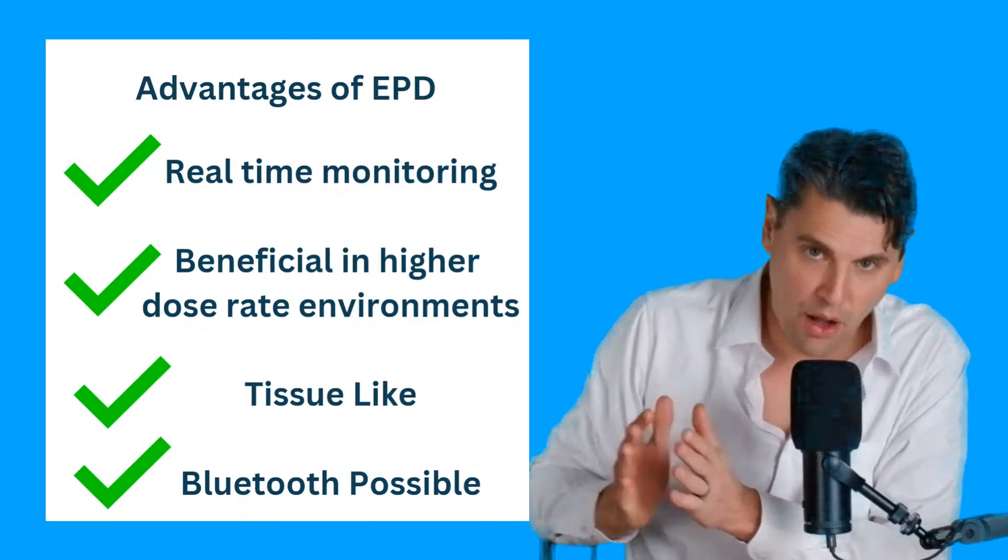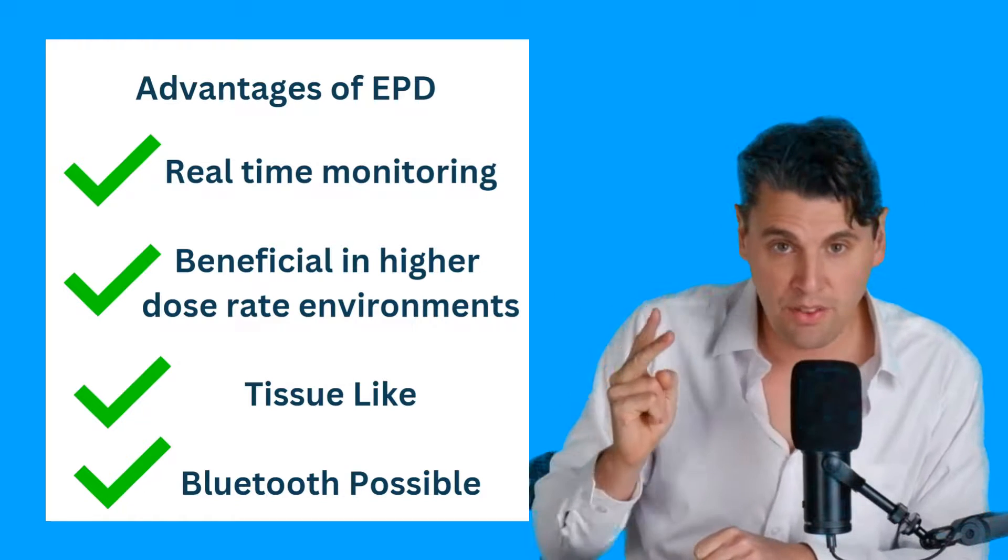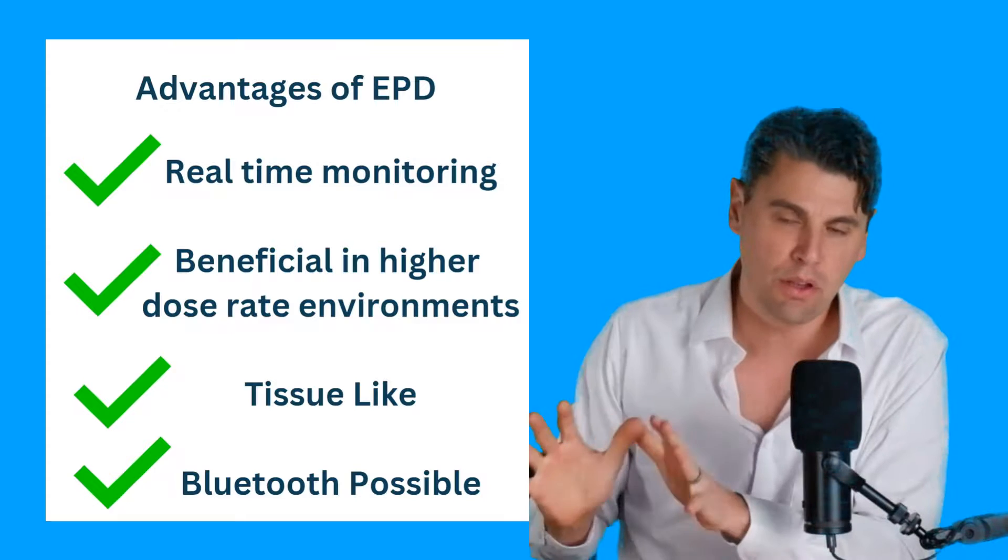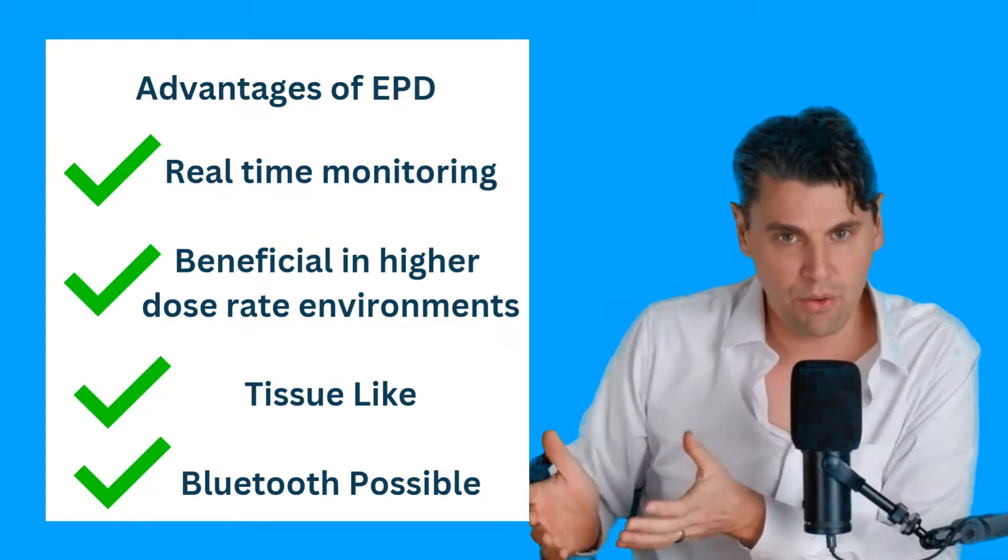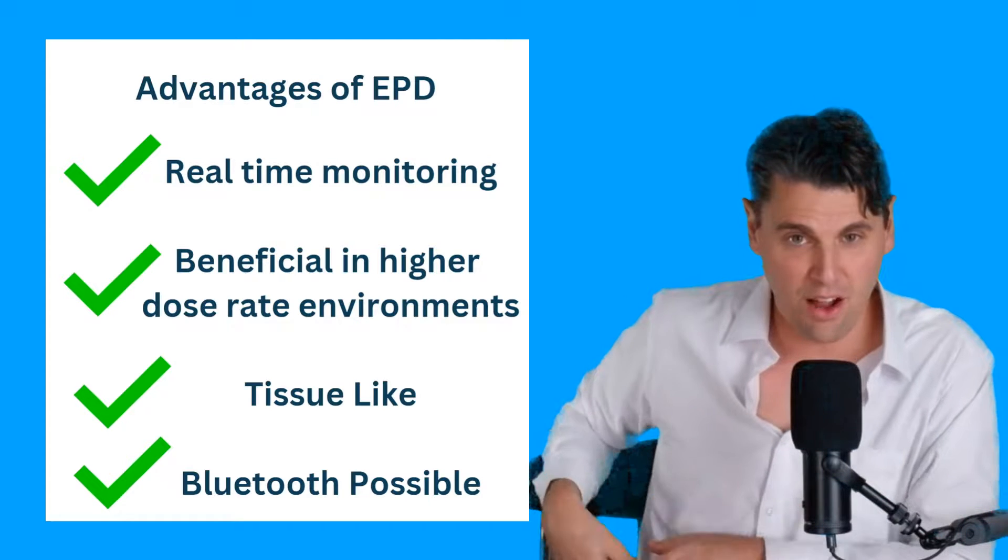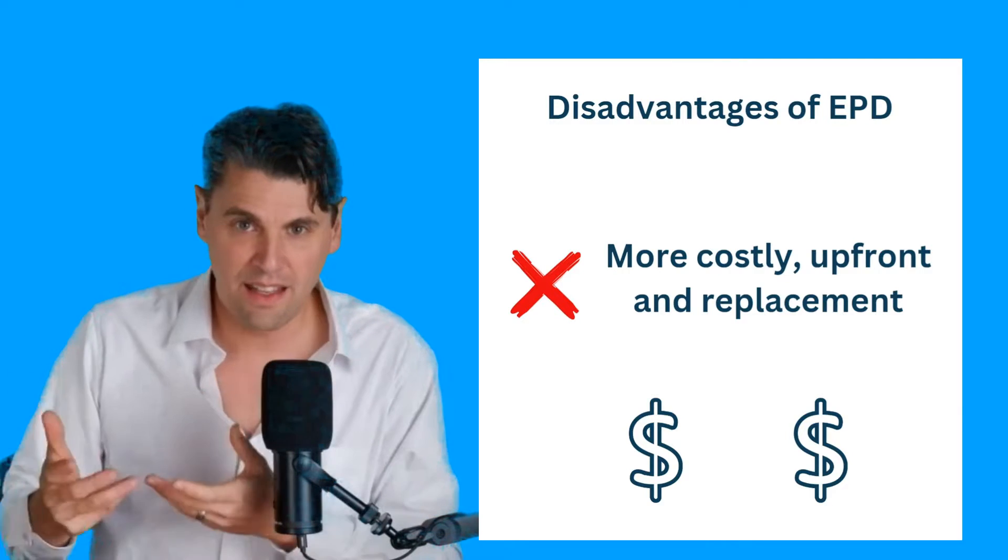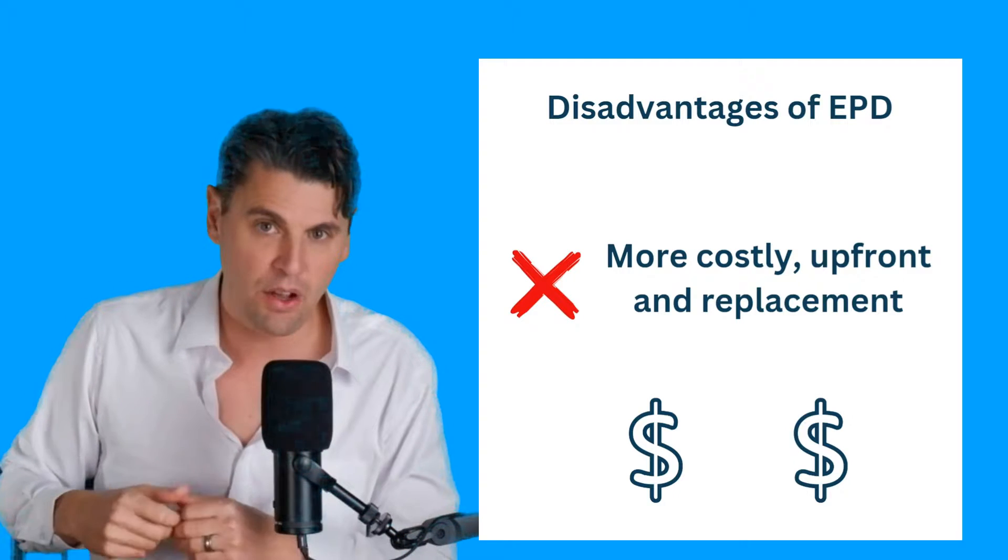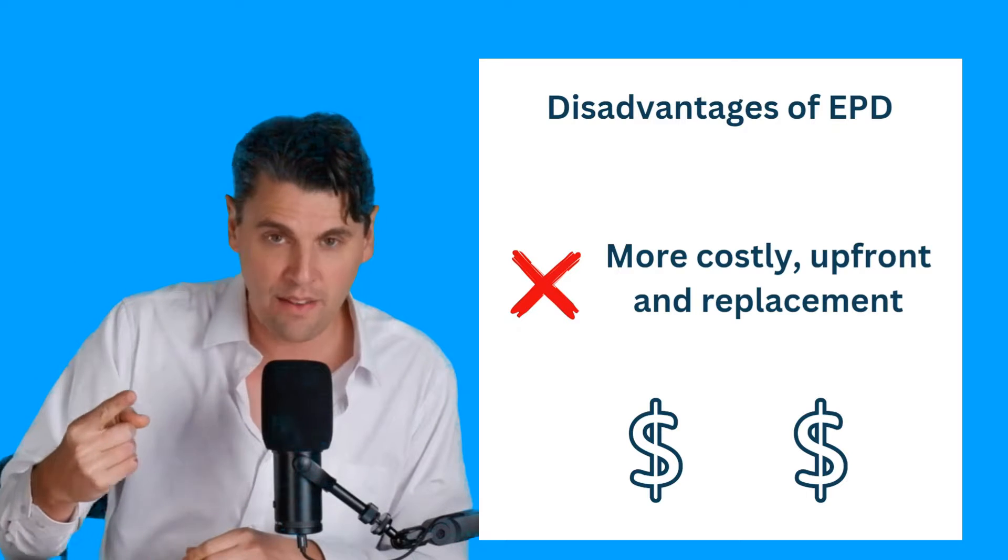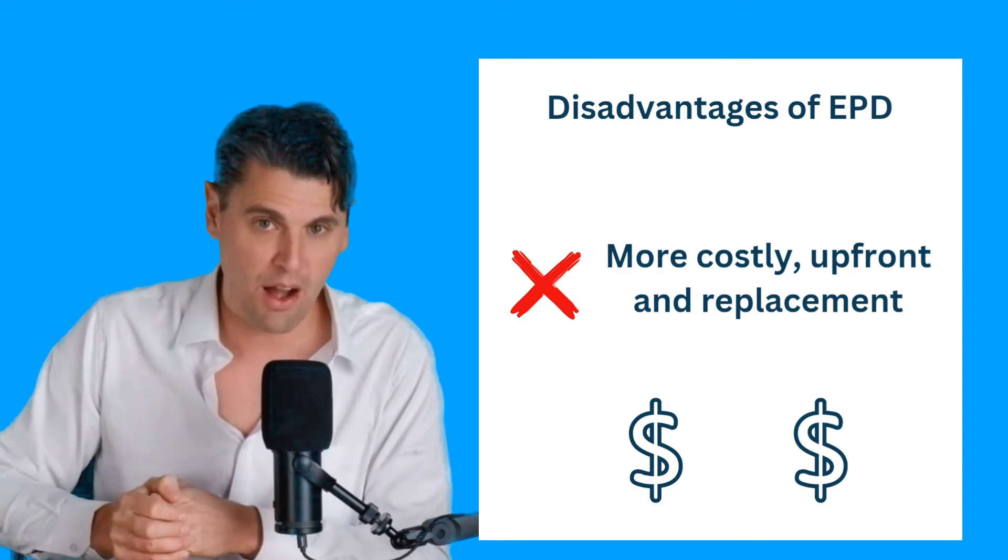The advantages is, in comparison with all the other techniques that we've talked about, it's real-time monitoring, so you don't have to send it away. It benefits from scenarios when you have a higher dose rate environment, and you'd like to monitor in a more real-time what the dose is in these environments. It's tissue-like. Nowadays, it can be Bluetooth-capable. They can actually send off the dose to another device, and then can be tracked automatically in that manner. Disadvantages is the cost. These are more expensive than any one of the technologies I've talked about so far. This is from both an upfront cost, and then also a replacement cost. So if you as a technologist lose one of these, then you would have a replacement cost for this device.